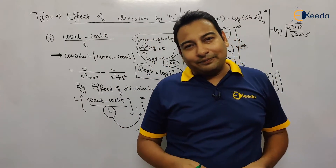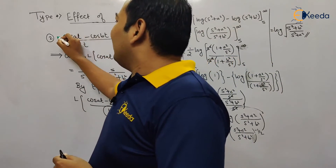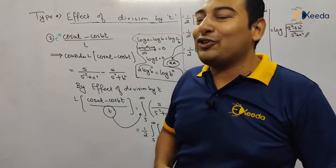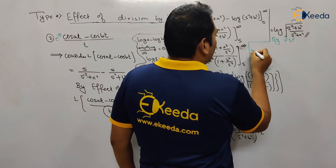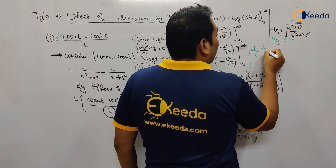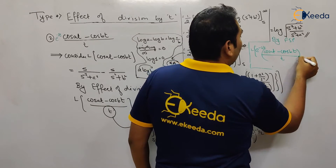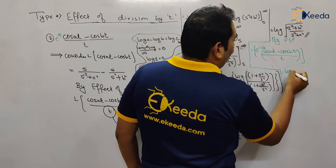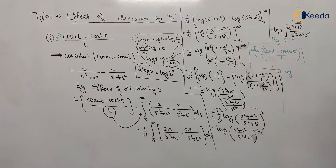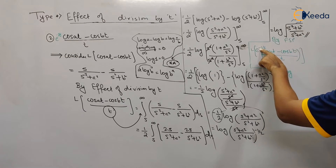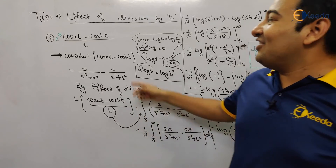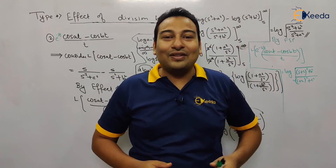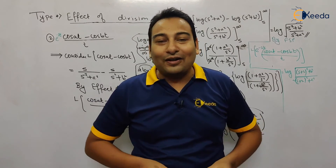This problem comes in the exam for six marks. To make it eight marks, just add a First Shifting Property (FSP) term — say e^(-2t). Then the Laplace of e^(-2t)·(cos(at) - cos(bt))/t equals log √[(s+2)²+b²) / ((s+2)²+a²)], since the FSP shifts s to s+2. The problem initially for six marks becomes eight marks. In the next video we'll discuss more examples on effect of division by t. Thank you.